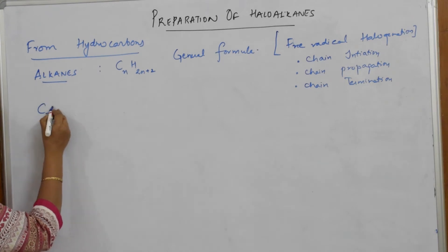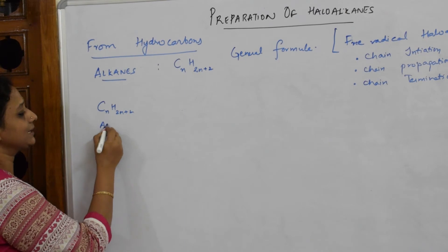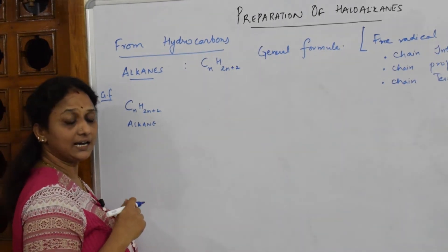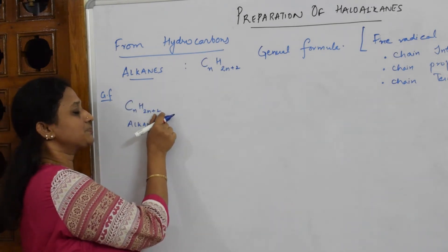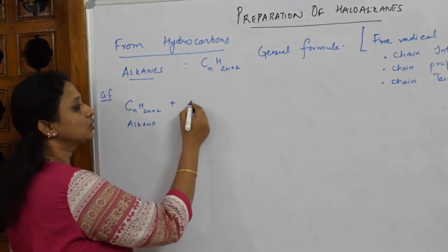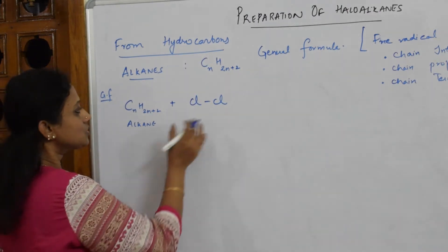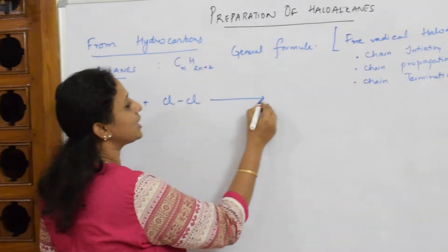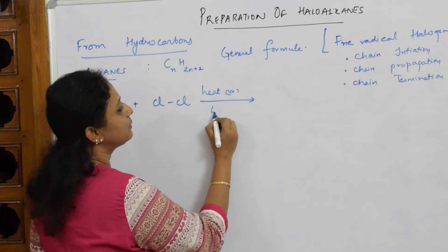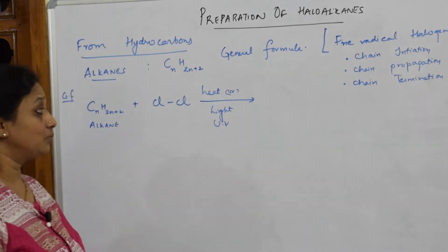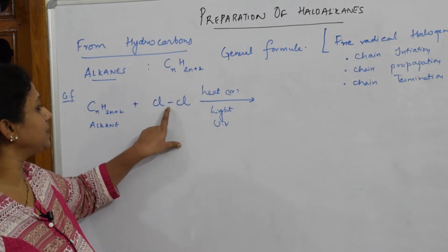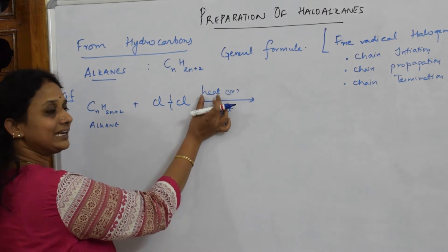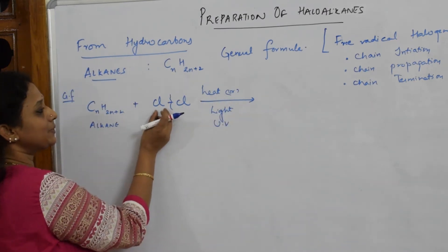Taking the general alkane CₙH₂ₙ₊₂, I need to substitute one halogen. So I take Cl₂ — it can be bromine as well. The most important condition for free radical halogenation is that the reaction must occur under heat or light, including UV light. Without this, the chlorine free radical will not form.